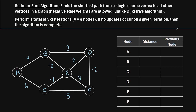The Bellman-Ford algorithm finds the shortest path from a single source vertex to all other vertices in a graph. When we use this algorithm, negative edge weights are allowed in the graph, unlike Dijkstra's algorithm. When we use the Bellman-Ford algorithm, we perform a total of v-1 iterations, where v is the number of nodes in the graph. If no updates occur on a given iteration, then the algorithm is complete.